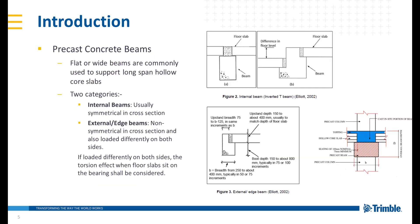Precast concrete beams. Flat or wide beams are commonly used to support long span hollow core slabs. They are classified into two categories: internal beam, which is usually symmetrical in cross section; and external or edge beam, which is non-symmetrical in cross section and also loaded differently on both sides. When loaded differently on both sides, the torsion effect when floor slabs sit on the bearing shall be considered.